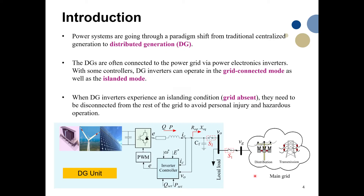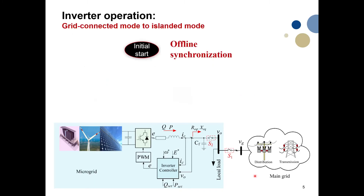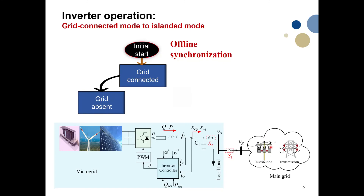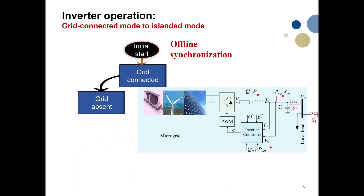To achieve this seamless operation, we need to address several control challenges. First, let's review how it works. We have this inverter-based microgrid, and to connect this inverter to the grid, we first perform offline synchronization before turning on the PWM — usually applying a PLL or other methods. When offline synchronization is complete, we connect to the grid for grid-connected operation. When the grid is absent, we need an islanding detection technique to detect that the grid is absent.